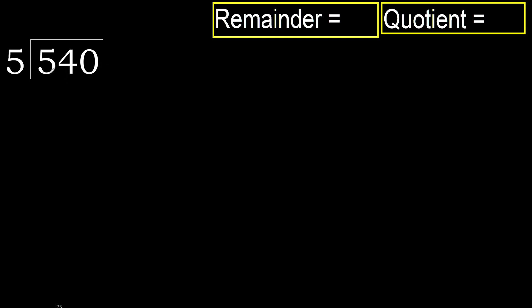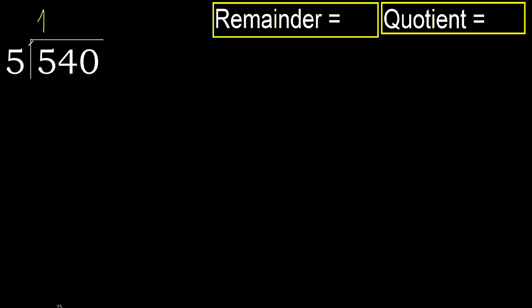540 divided by 5. 5 is not less, therefore with 5. 5 multiplied by which number is nearest to 5 but not greater? 5 multiplied by 2 is 10, which is greater. Multiplied by 1 is 5, which is not greater.